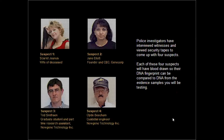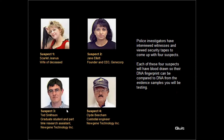Police investigators have interviewed witnesses and viewed security tapes to come up with four suspects. First suspect: Scarlett Genis, wife of the deceased. Second suspect: Jane Elliott, founder and CEO of Genicorp. Third suspect: Ted Smithson, graduate student and part-time research assistant at Nugene. Fourth suspect: Clyde Beacombe, custodial engineer at Nugene Technology. Each of these four suspects will have blood drawn so their DNA fingerprint can be compared to DNA from the evidence samples you will be testing.